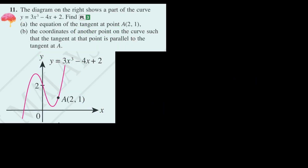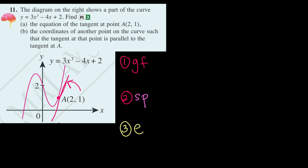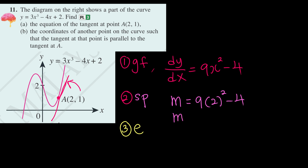Question 11. They ask us to find the equation of the tangent at point A (2, 1). Whenever we have this kind of question, remember the steps: first, find the gradient function using dy over dx; second, substitute the point to find the gradient value; third, construct the equation. The gradient function dy over dx is 9x squared minus 4. Substituting the point (2, 1), the gradient at A is 9 times 2 squared minus 4, which equals 32.